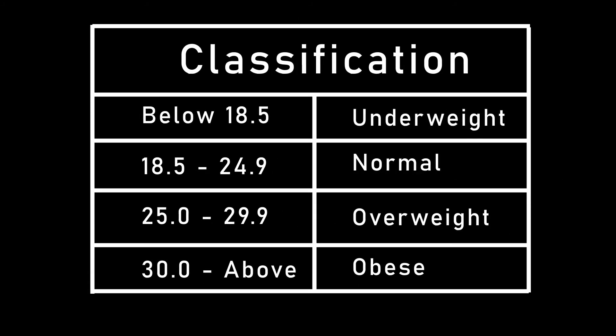The following classifications of BMI are: below 18.5 is considered underweight; 18.5 to 24.9 normal; 25 to 29.9 overweight; 30 and above obese.